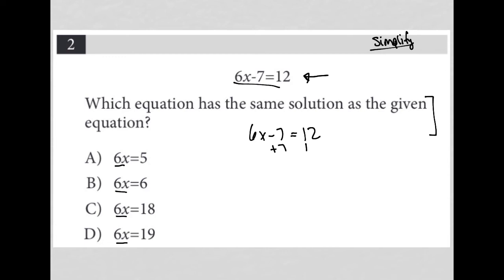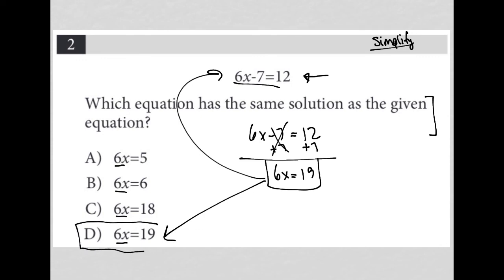Now I'm going to read the question. It says which equation has the same solution as the given equation. Well, 6x equals 19 would have to be the correct answer because 6x equals 19 is equivalent to 6x minus 7 equals 12. So our answer here must be choice D.